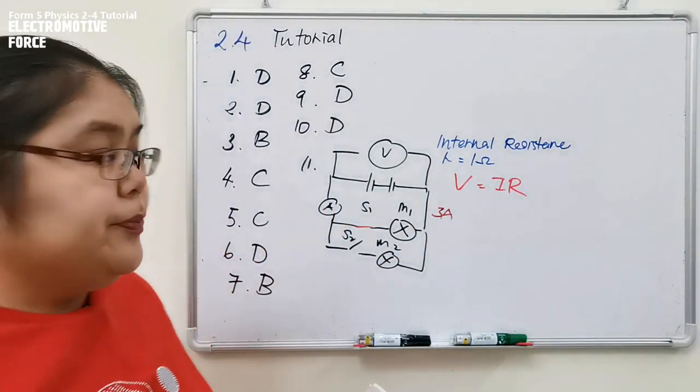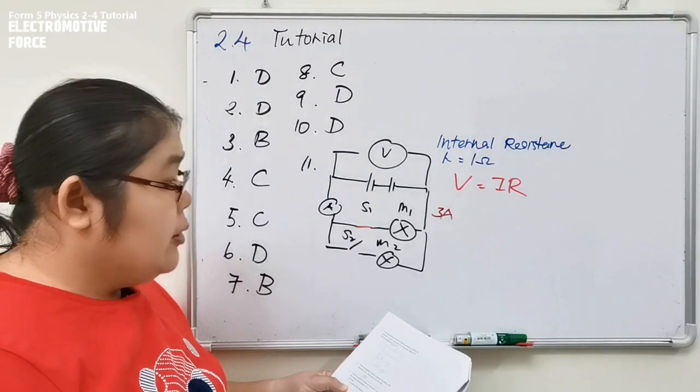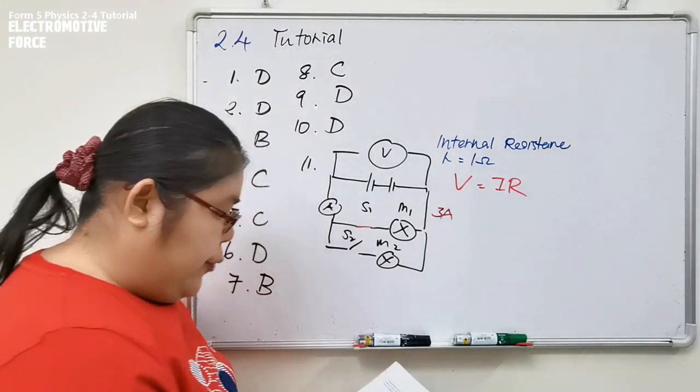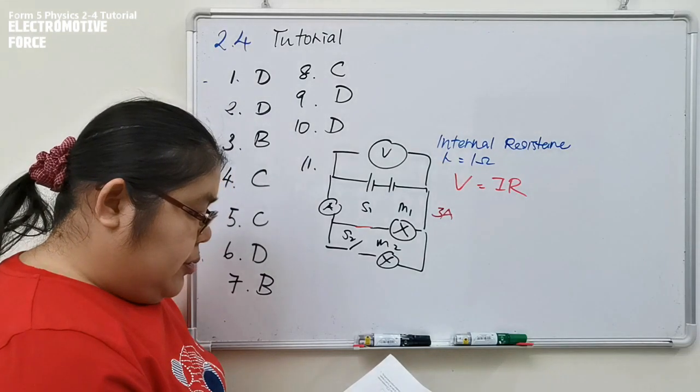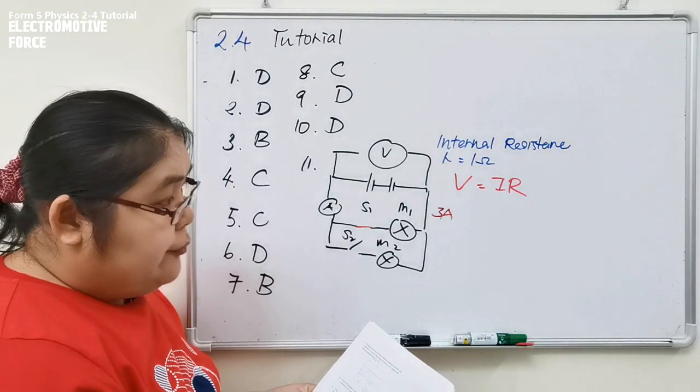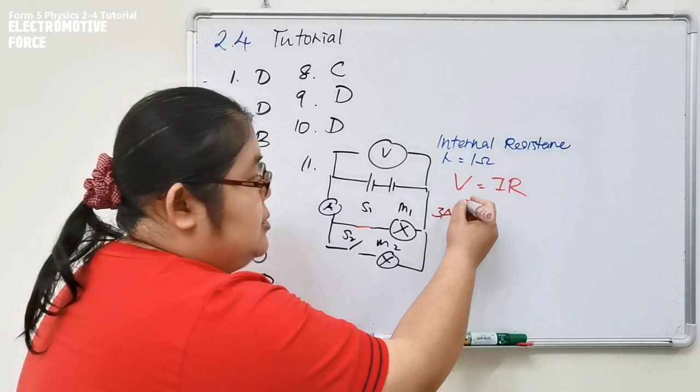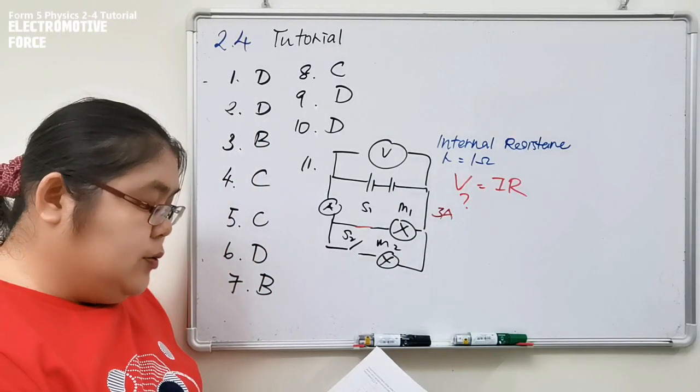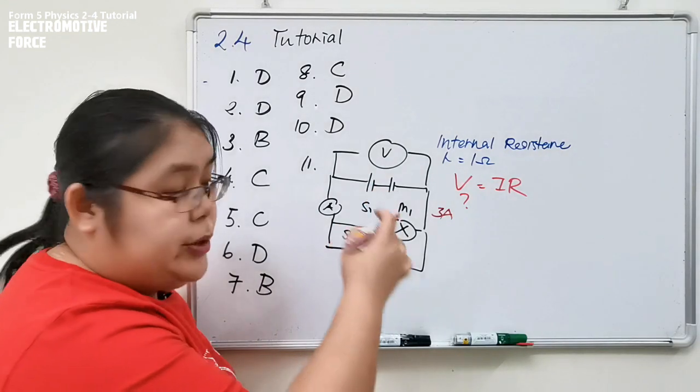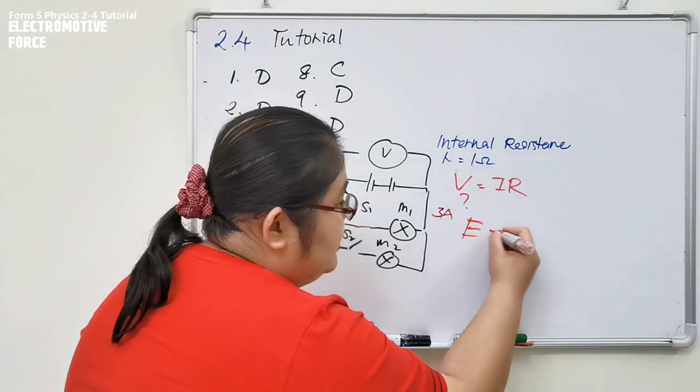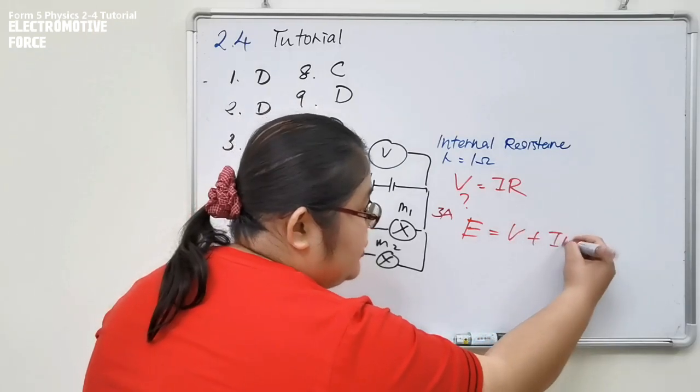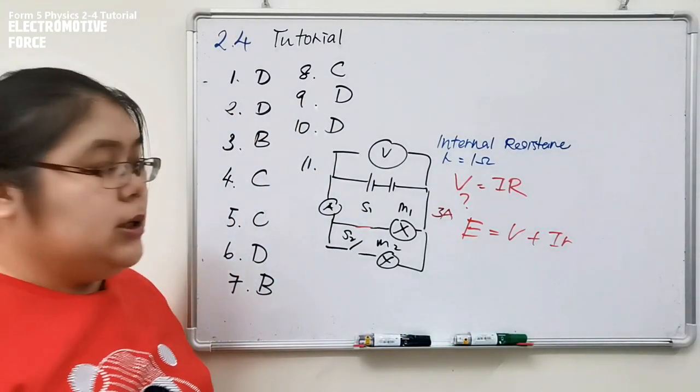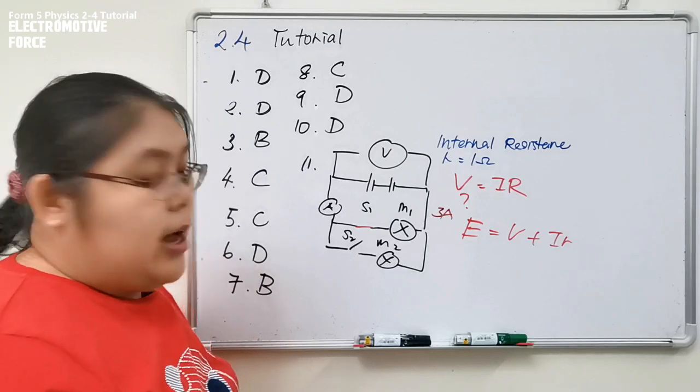To solve the problem, V is not 12 volt, we don't know how many. Potential difference we don't know. But now we need to know EMF, we know that. So we're using the formula E equals V plus I small r.